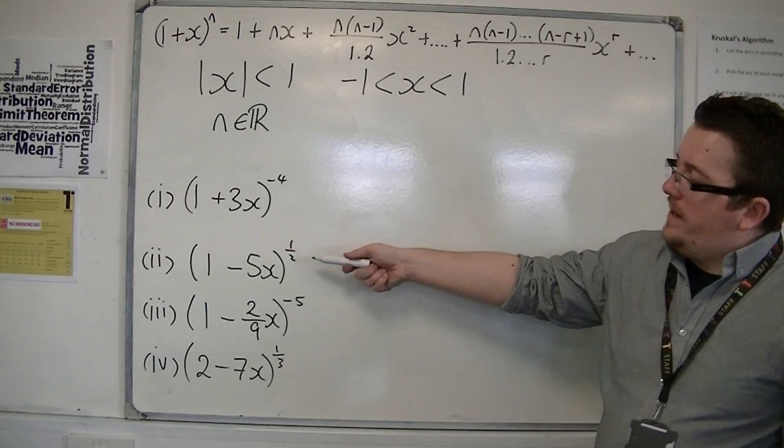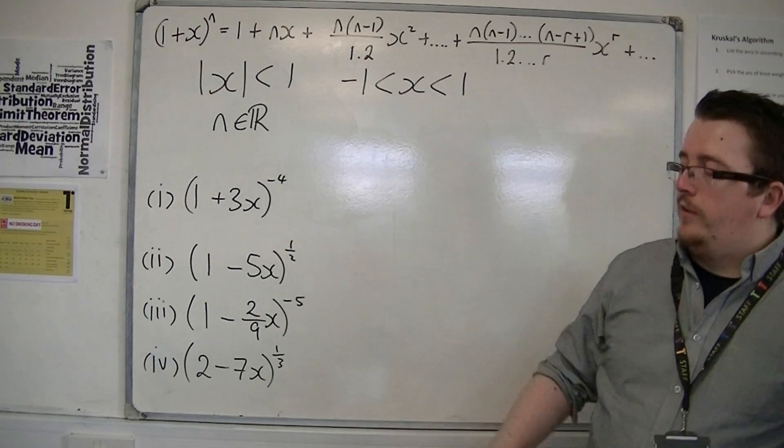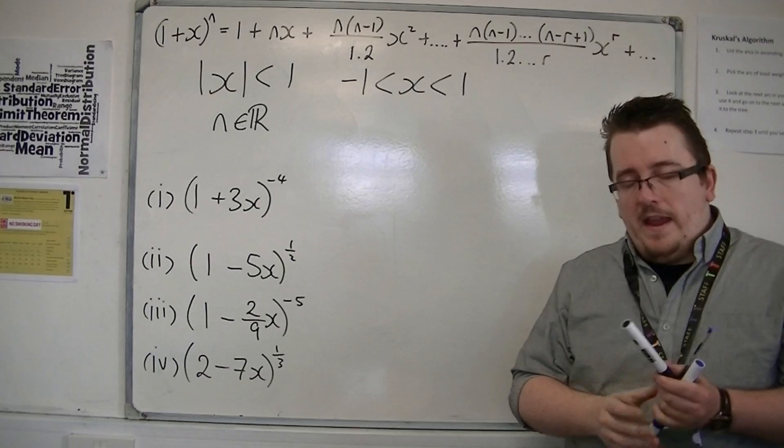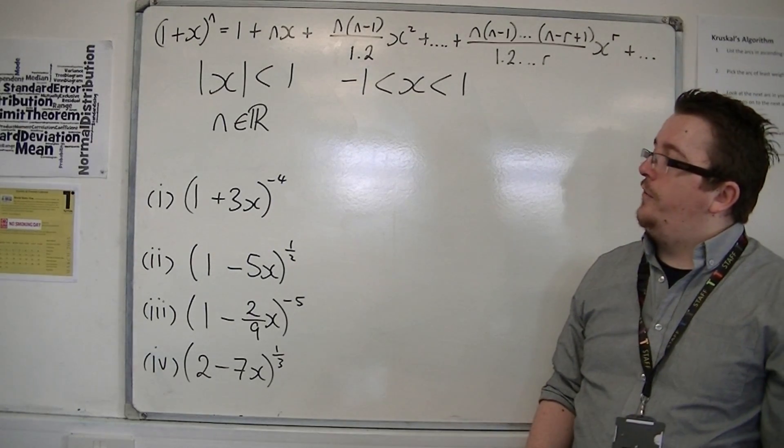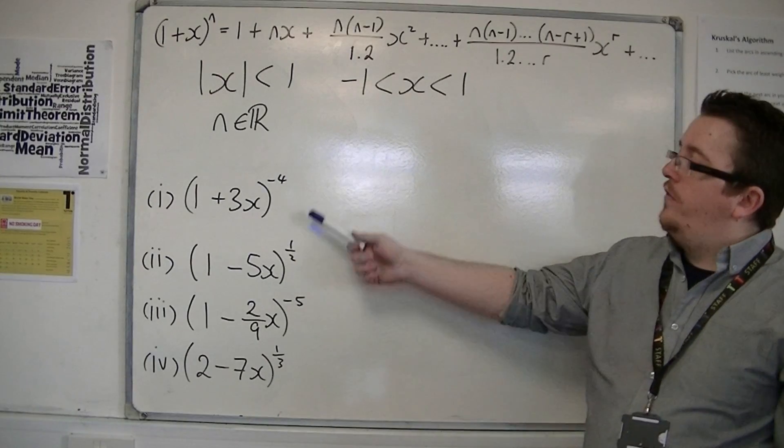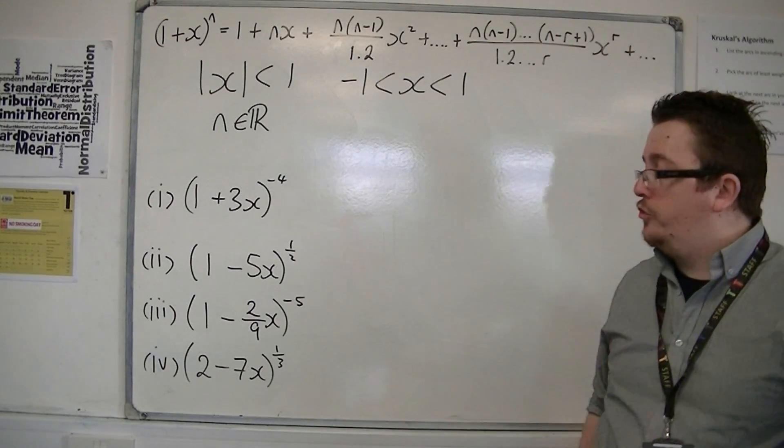If we had to say what values are these valid for, then we use that same expansion mod x is less than 1. That's not saying that all of these are valid when mod x is less than 1. That's not true.